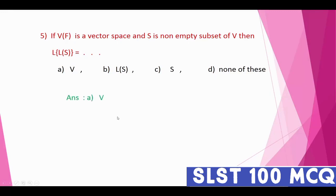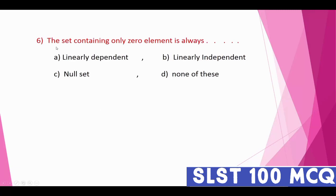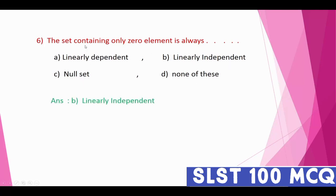Question number six: the set containing only the zero element is always linearly dependent. This is a most important question. The zero element — is it linearly dependent, independent, a null set, or none of these? Option B is correct: it is linearly independent.